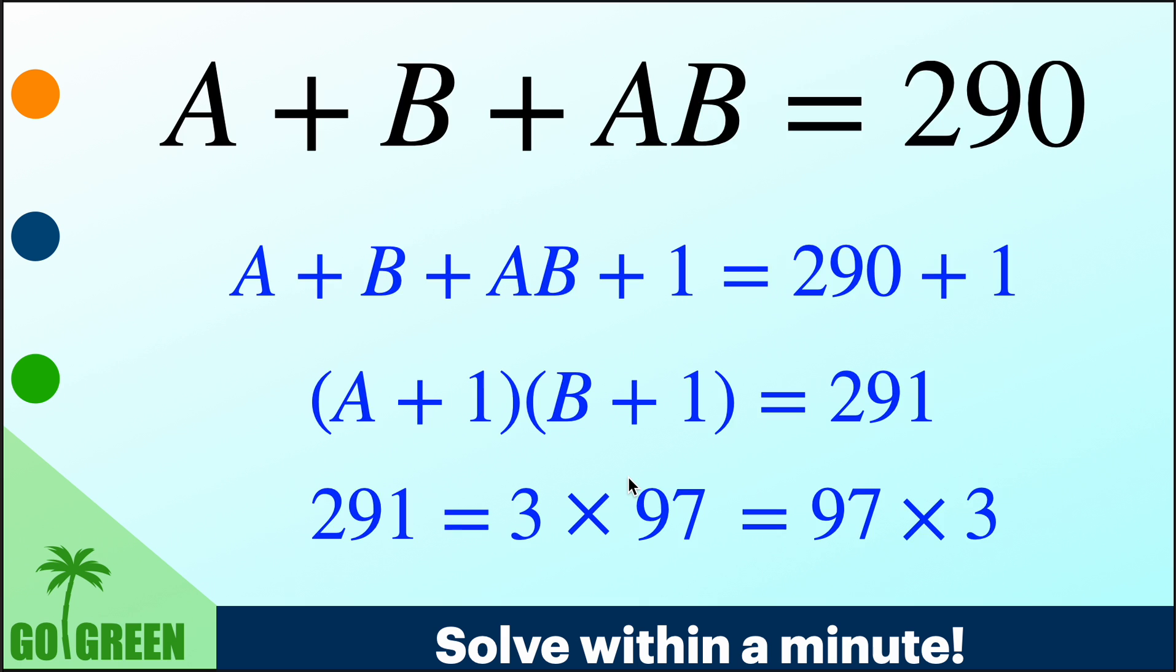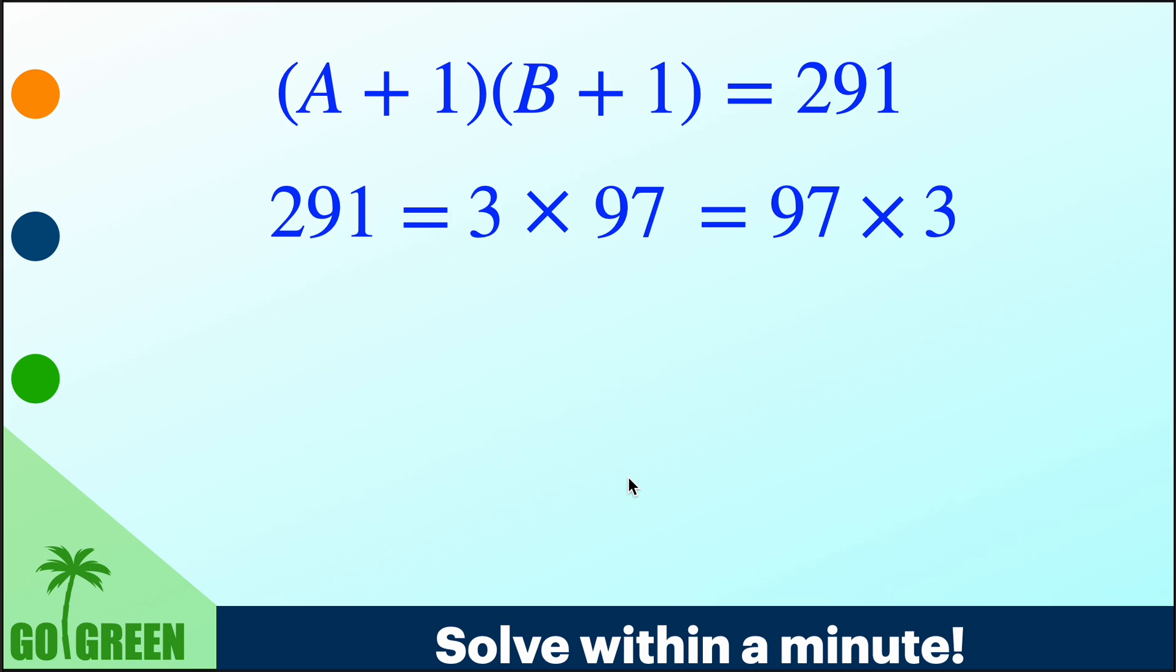Now we have seen here that 291 can be written only in a single or let's say these two ways, 3 into 97, 97 into 3. So basically from here,